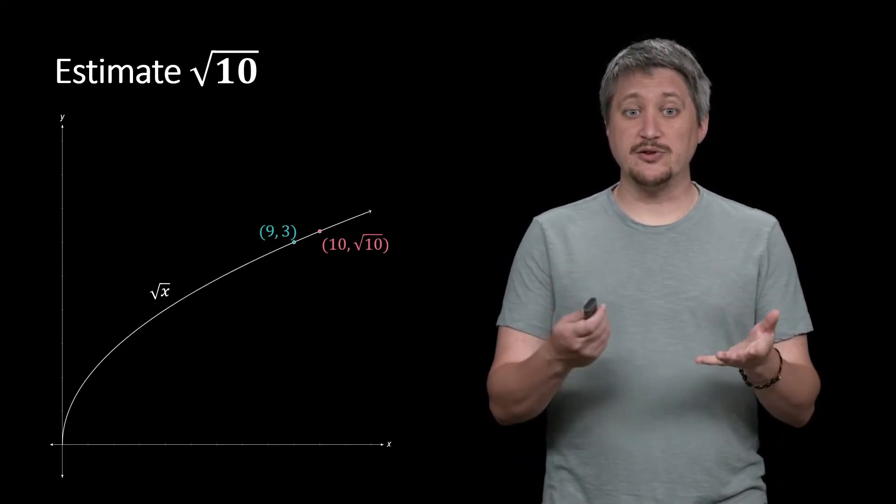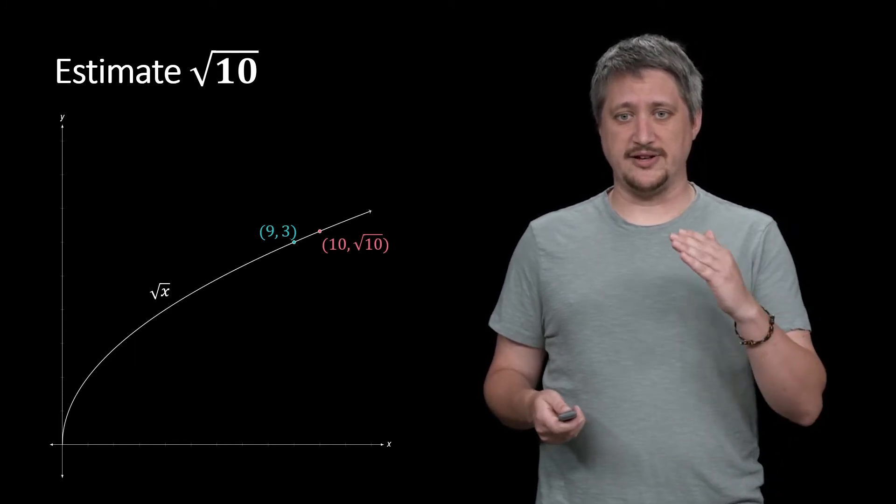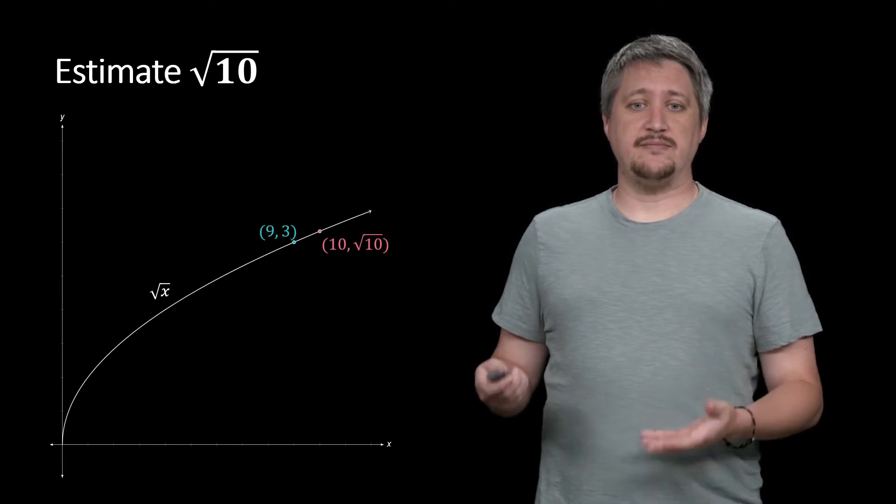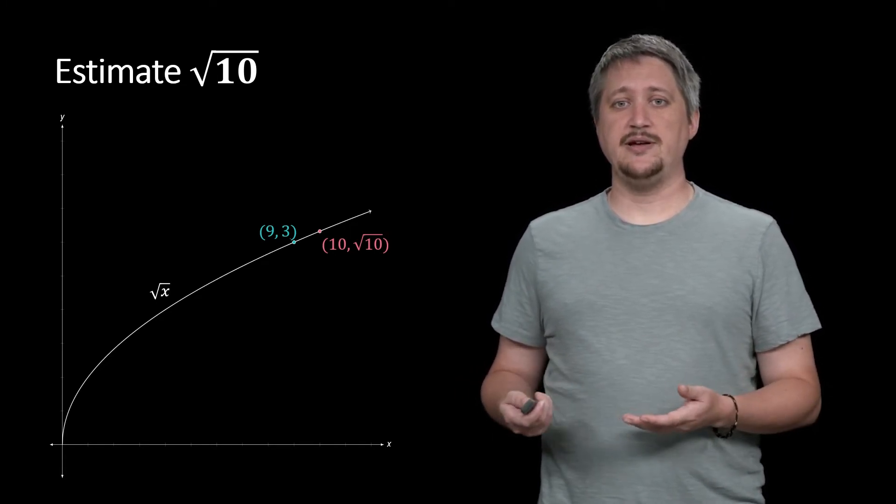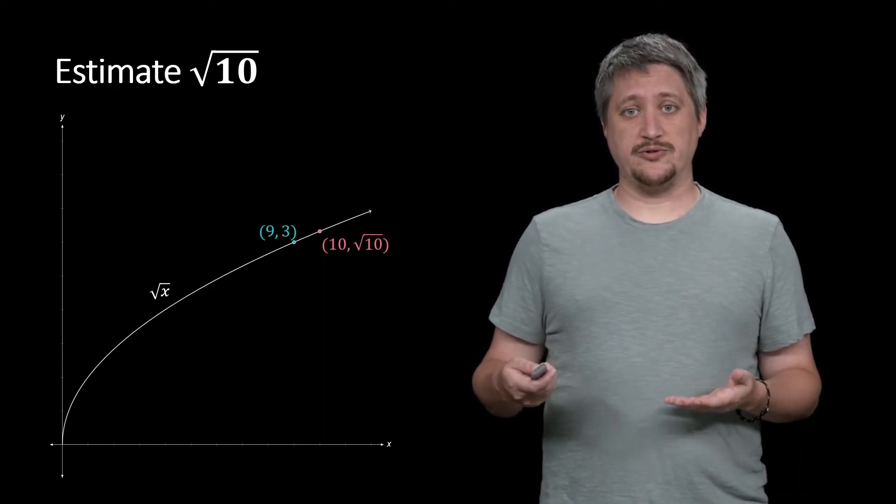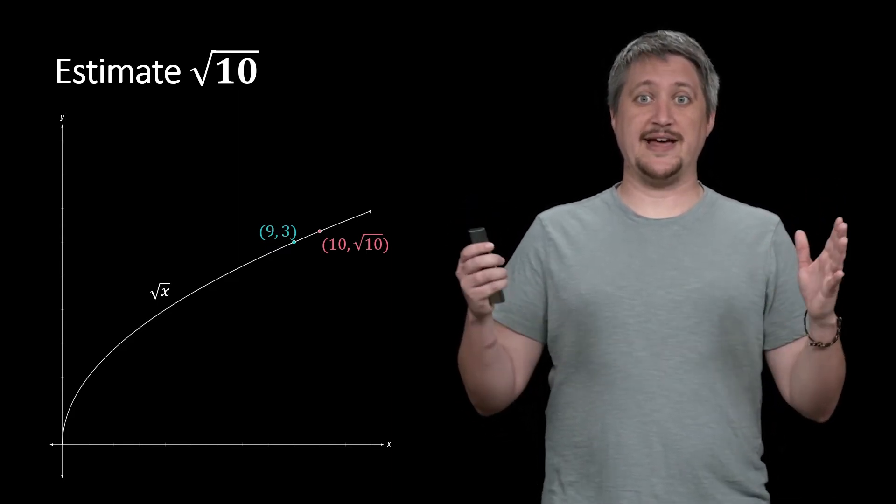Thinking about what this looks like, if we think about what the square root of x graph looks like, this nice curve here, we know the point nearby that 9 comma 3. 9 is the input, square root of 9 is 3. We want to get some sort of estimate for the square root of 10. So that would be the point 10 comma square root of 10, whatever that actually is.